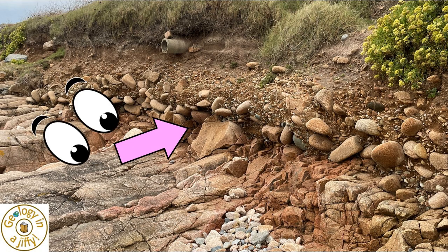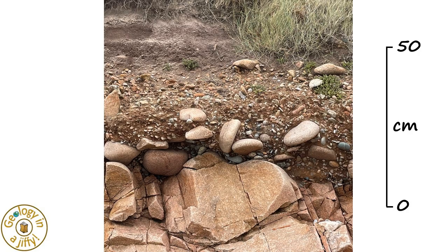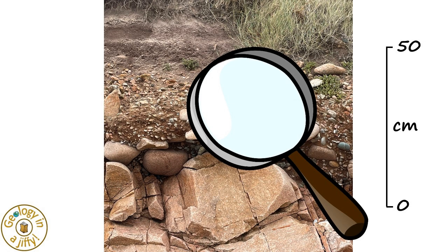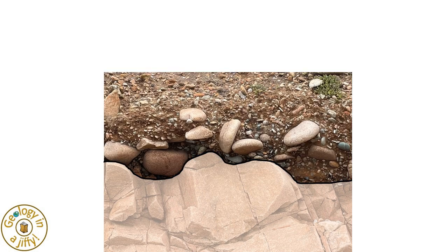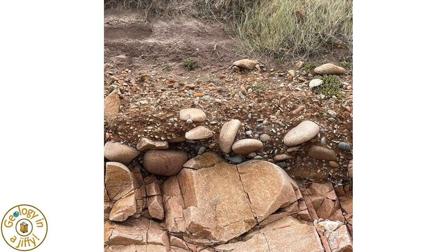Looking at this part of the section, we see the wave-smoothed granite foreshore, its unconformable surface, the raised beach deposits, and the uppermost glacial deposits — with this part being our cross-section of the ancient and now raised beach.